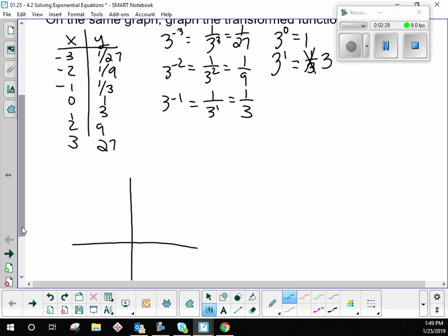Negative 3, 1 over 27. 1 over 27 is very small. So when negative 3 is about here, 1 over 27 is about there. Negative 2, 1 ninth. 1 ninth is a little bit bigger, so negative 2 is about here, and so that would make 1 ninth about here. Negative 1, 1 third is about here. And then 0, 1. So this is 1 third, 0, 1 is about here.